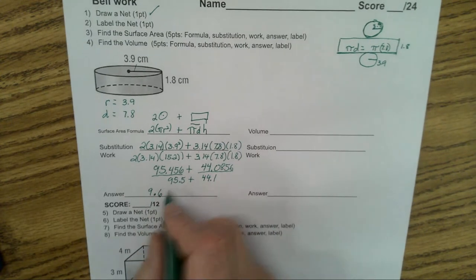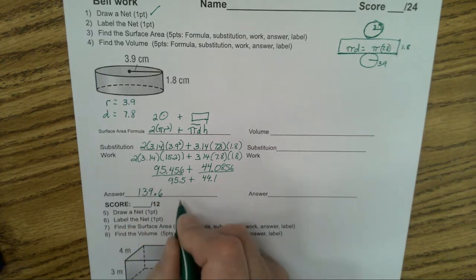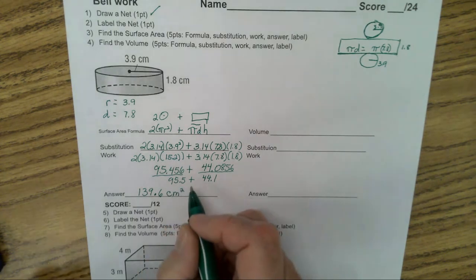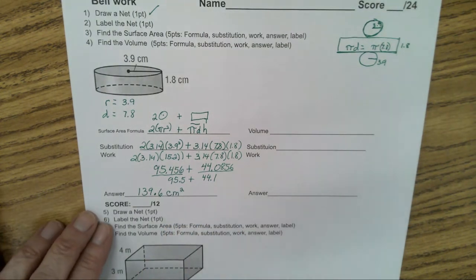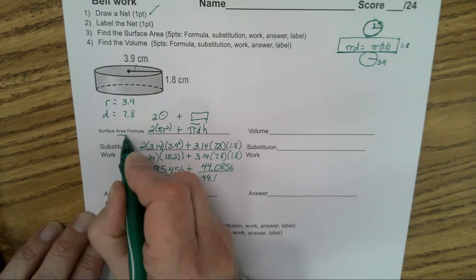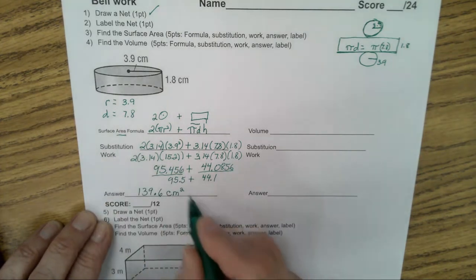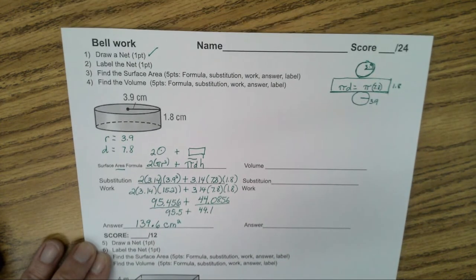You should have 139.6 centimeters squared. Surface area is squared. Whenever you are doing something with area, it is squared. So let's go over how many points.